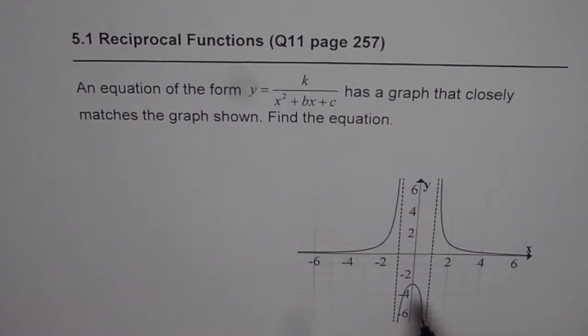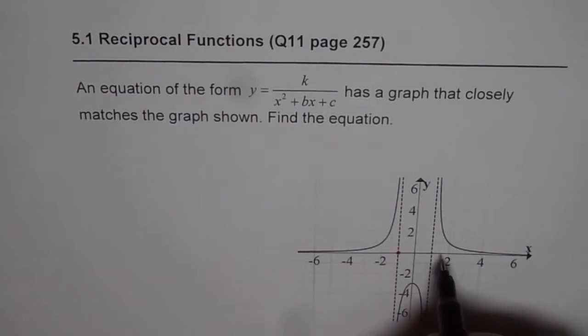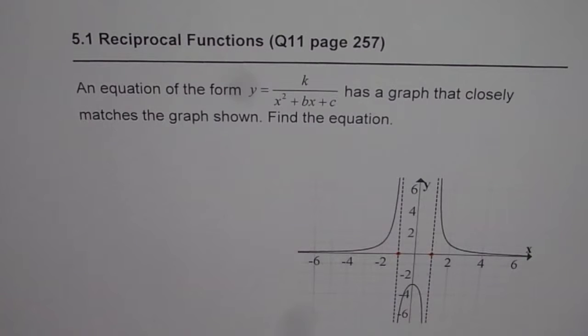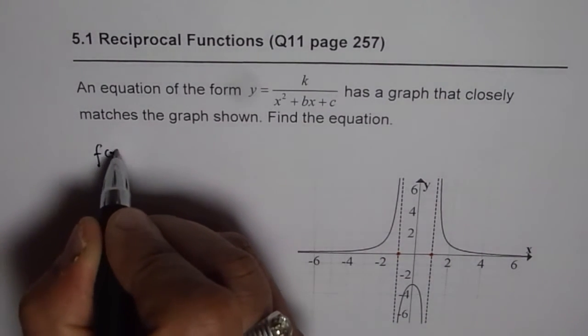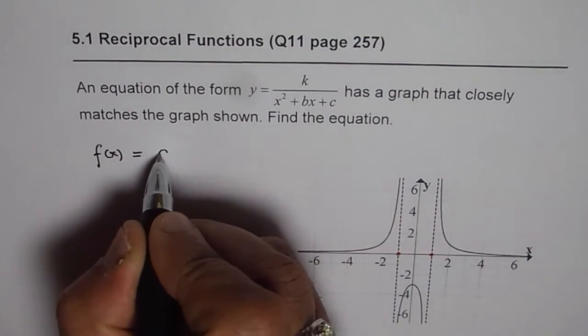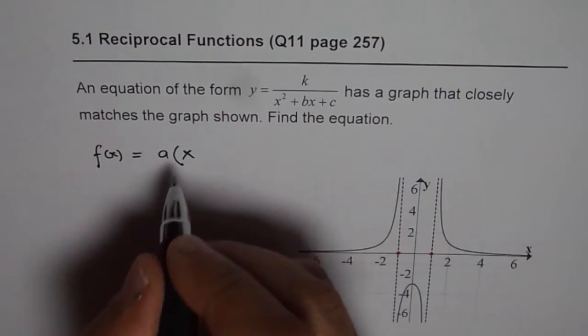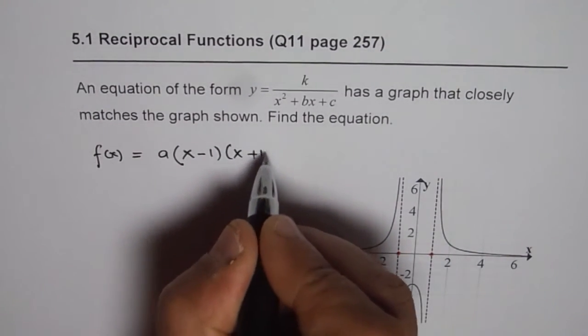Now how to do that? Well, from the vertical asymptotes we know we have real roots at these points at minus 1 and plus 1. So we can write the quadratic function. Let me write that function as f of x equals a times x plus 1 times x minus 1. So these are the two roots.